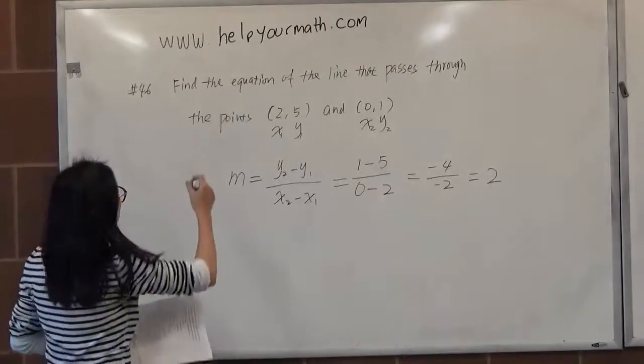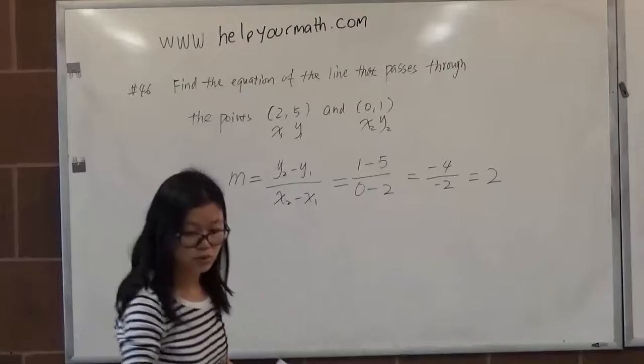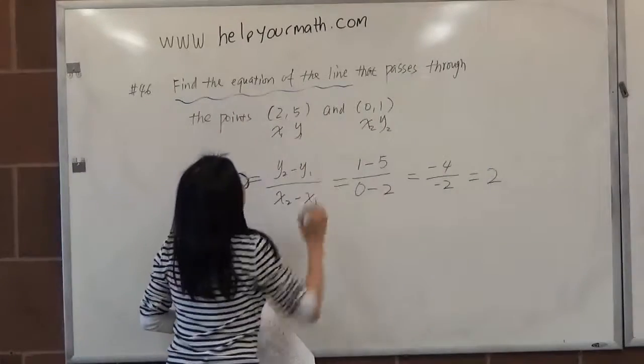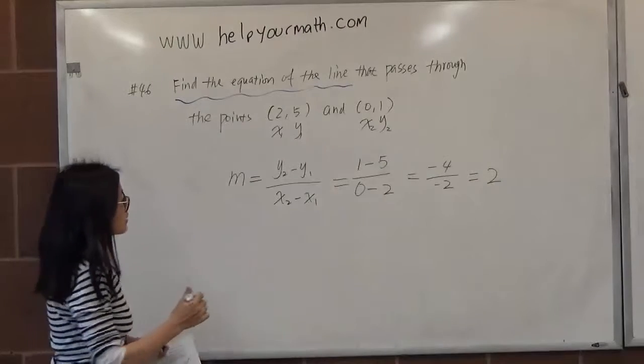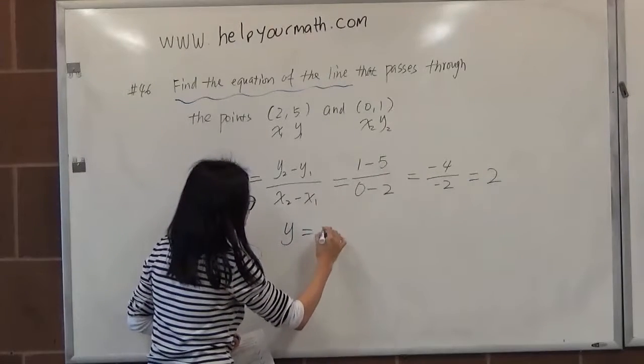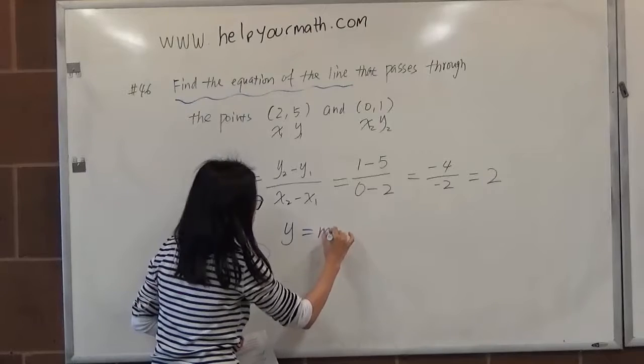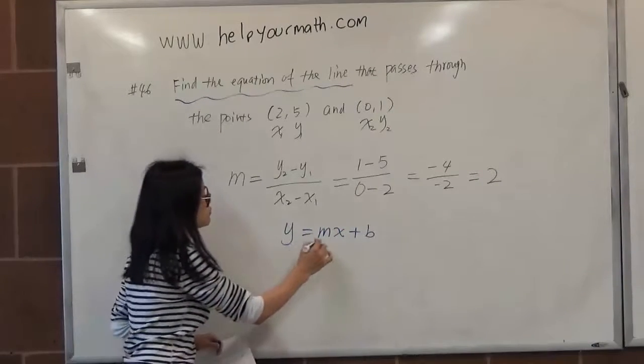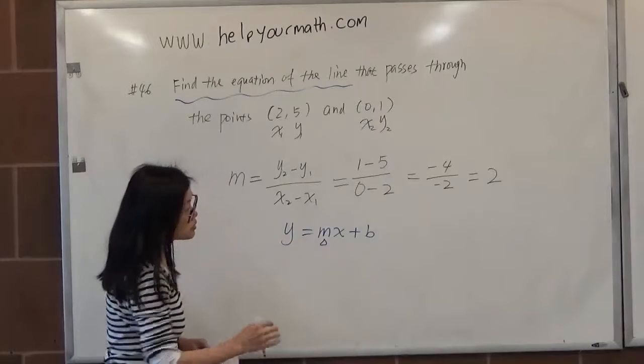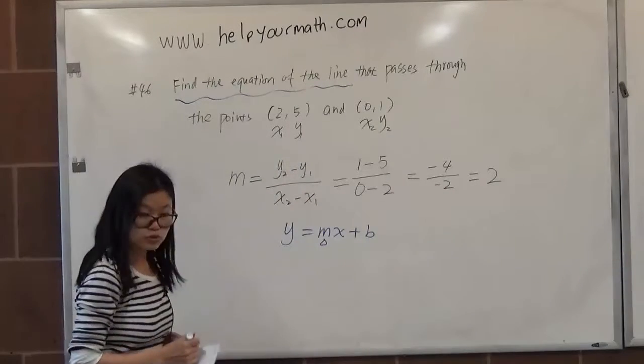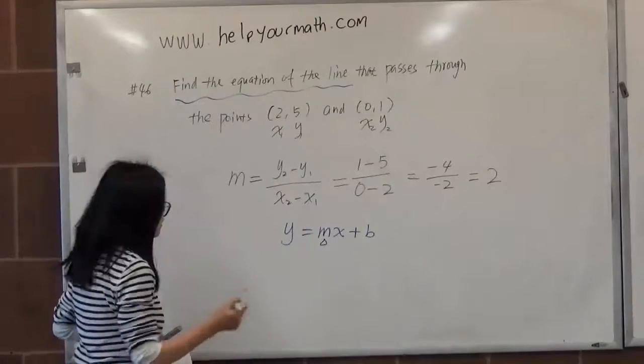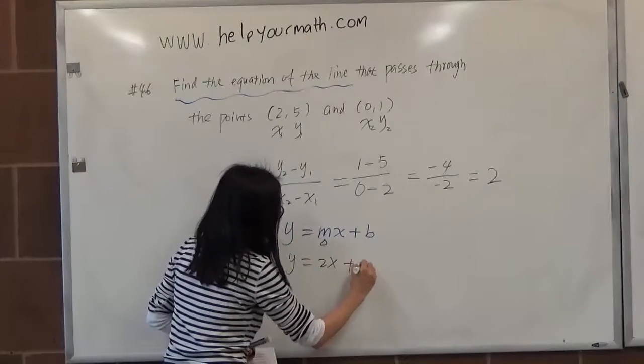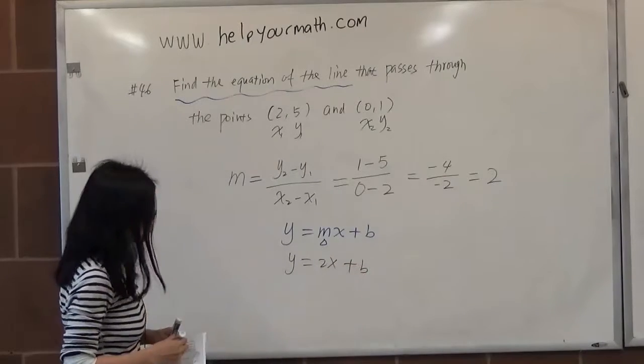Now, the question was asking us to find the equation of the line. So we can write the equation of the line in the slope-intercept form, which is y equals mx plus b format. That's why I got the slope first. And we already found that it's equal to 2, which means we have y equals 2x plus b right now.